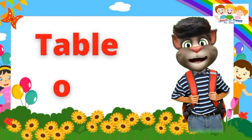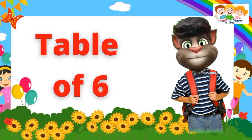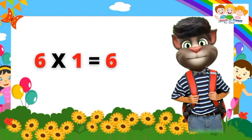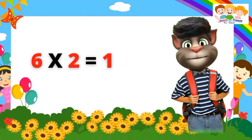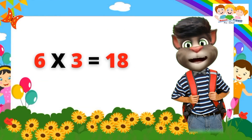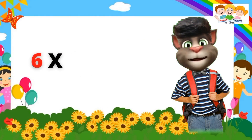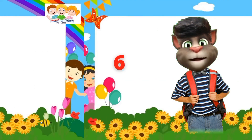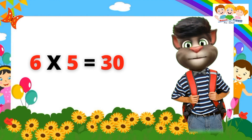Table of Six. Six one's are six. Six two's are twelve. Six three's are eighteen. Six four's are twenty-four. Six five's are thirty.